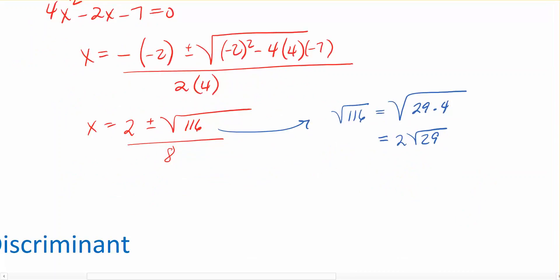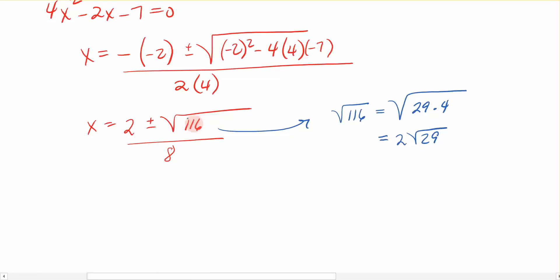All right, so let's go back over here. Let's look at cleaning up what we've got. x is equal to 2 plus or minus 2 square roots of 29, all divided by 8.